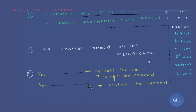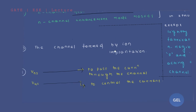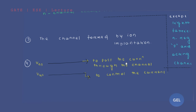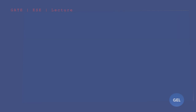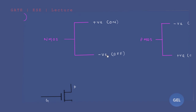The third point is that the fabricated channel is formed by ion implantation, and VGS is responsible to pass the current through the channel and to control the flow of current. The fifth point: if you make VGS more and more negative, the increasing negative value of VGS will lead the current value toward off.